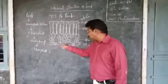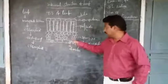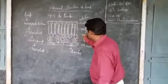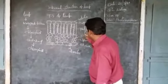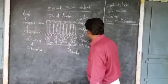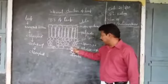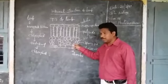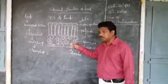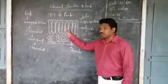Where stomata are present, there we can see some air spaces. This is called air space. Through this air space, that means air entered — carbon dioxide enters this air space through stomata. And from there it slowly diffuses into the tissue.